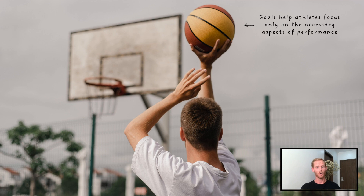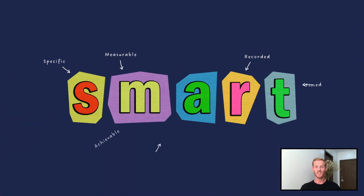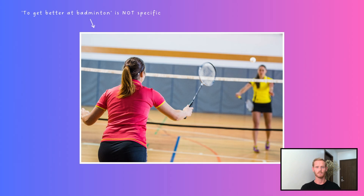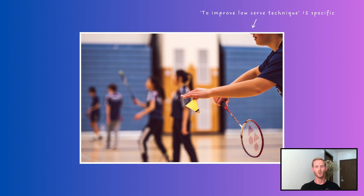However, the way in which a goal is set is crucial and will determine its effectiveness. For best results, the SMART principle of goal setting should be consistently applied. The S stands for specific, which means that goals should be clear and unambiguous, or in other words, focused on a particular aspect of performance. For example, 'I will get better at badminton' is far too vague a target, leaving the performer unsure about the steps they should take to attain it. 'To improve low serve technique' is a far more specific goal that provides a definite focus and will ultimately benefit performance.